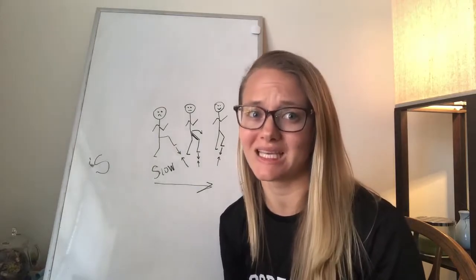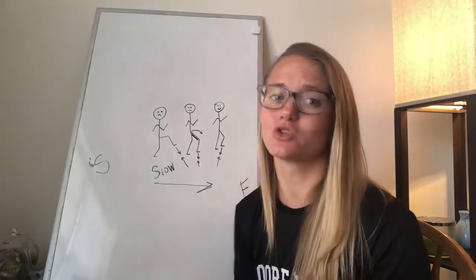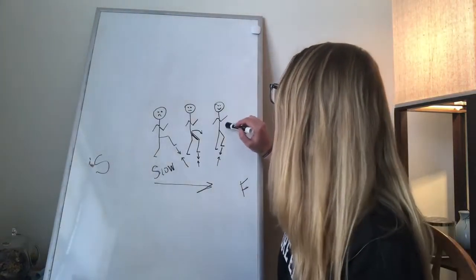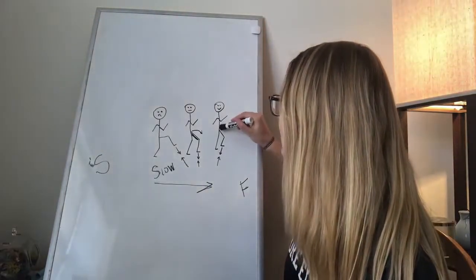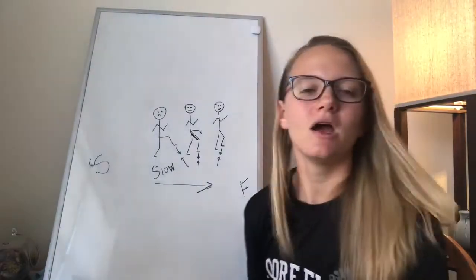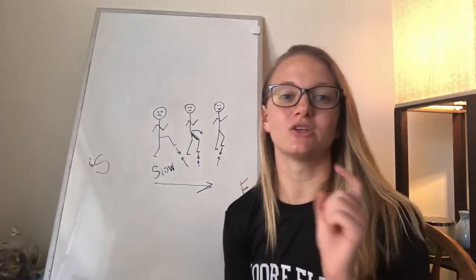Okay, so those are the two really big keys with overstriding. So you always want to make sure you're running like this guy over here. When you put this foot down, your hips are pretty much over top of your foot...